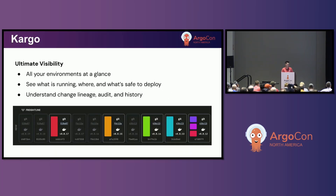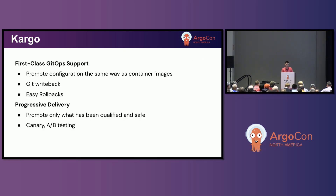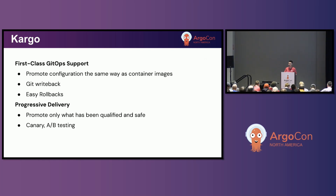With Cargo, you'll get better visibility into your promotion process — seeing all your environments at a glance, understanding what's running where and what's safe to deploy. You'll be able to see history of what was deployed along with links back to your source code repo and commit history. We built it with the GitOps use case in mind. One of the unique features of Cargo is its ability to promote configuration, not just images — you're able to promote manifest changes like environment variables from stage to stage. Cargo makes Git writebacks and rollbacks really easy with a one-click. And finally, you can start practicing progressive delivery by qualifying your artifacts before they're allowed to deploy to other stages.